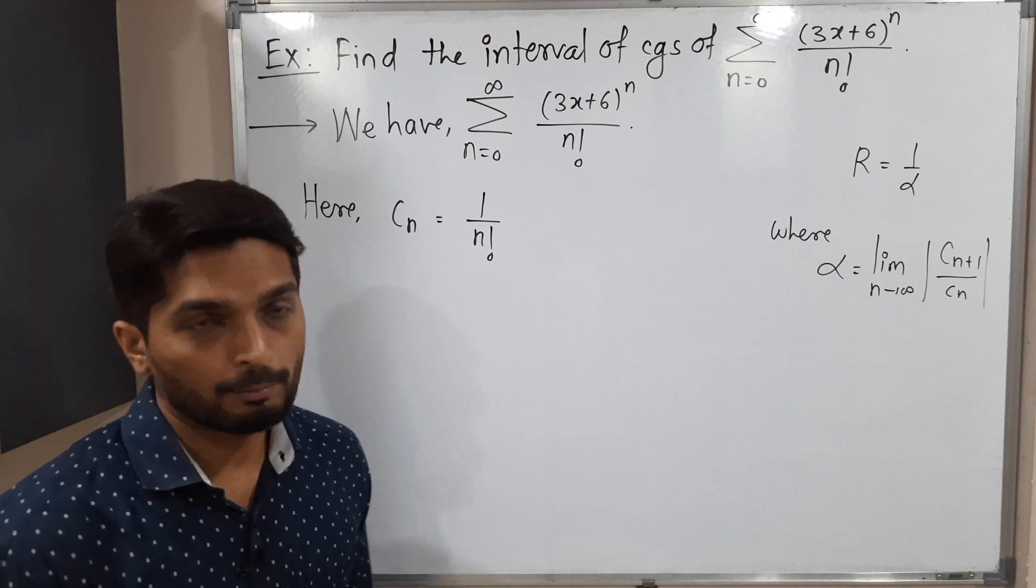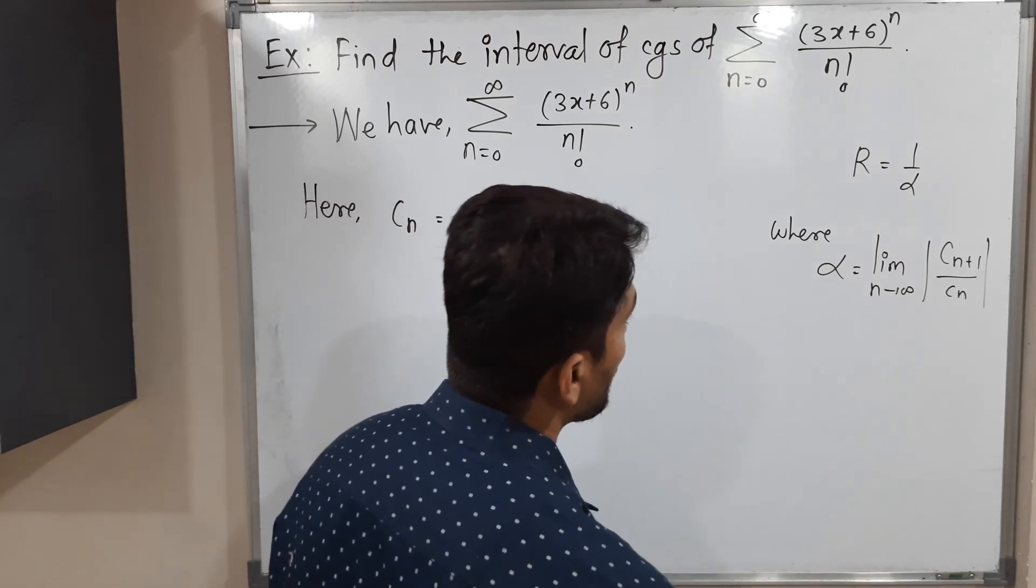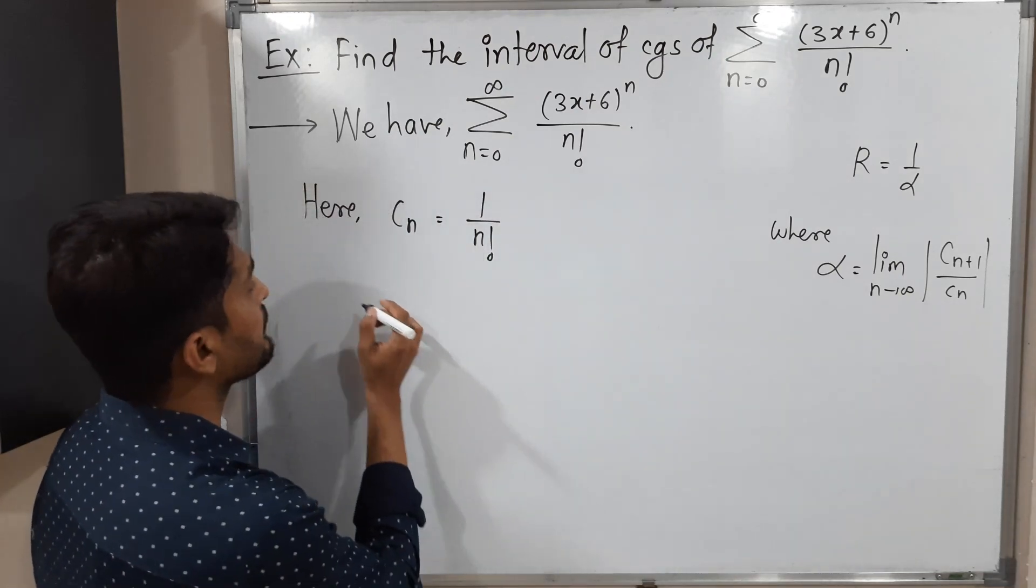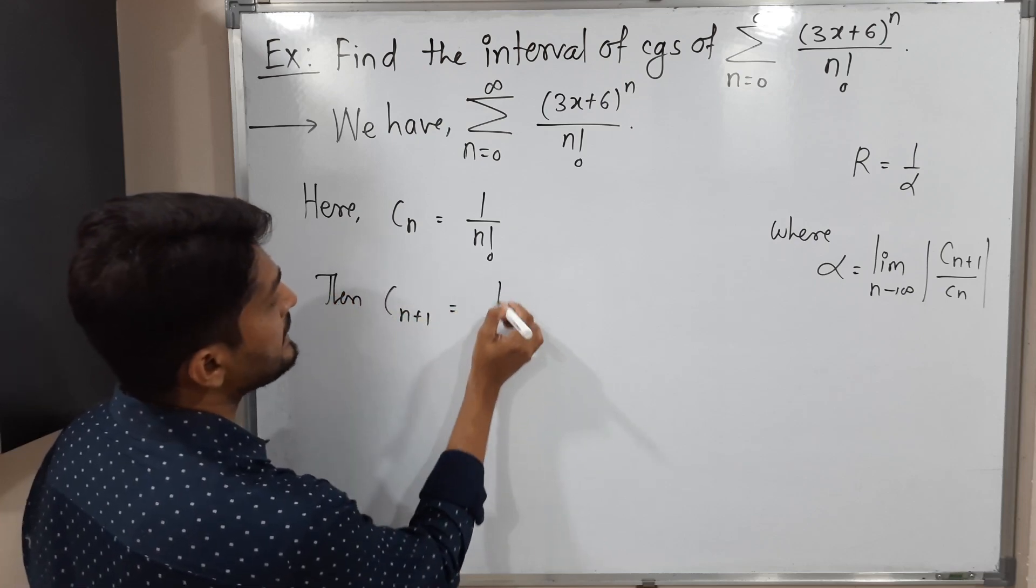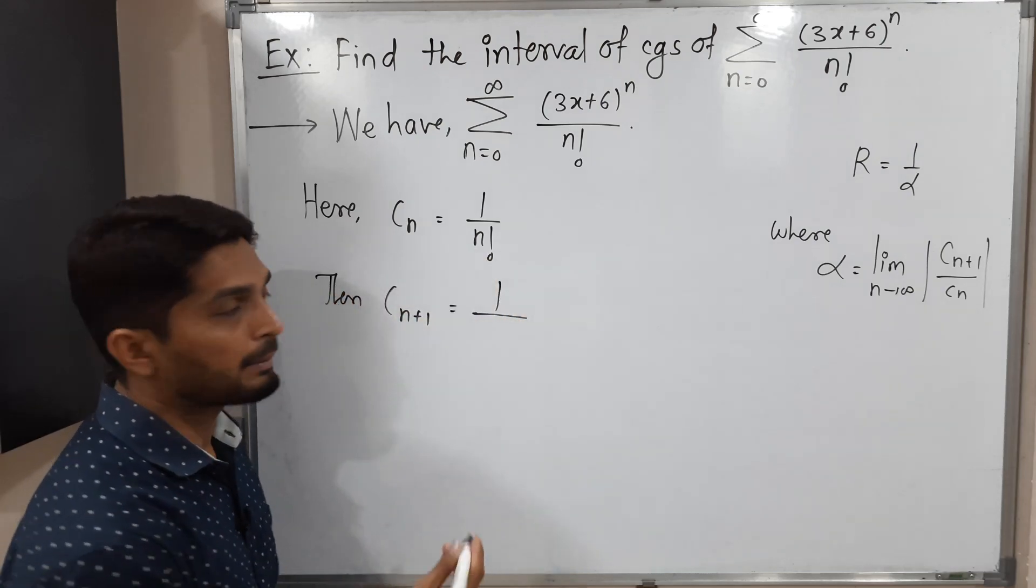Let us find alpha, but for that we need to have cn plus 1. So let us write cn plus 1. It can be easily obtained just by replacing n by n plus 1, so n plus 1 factorial.